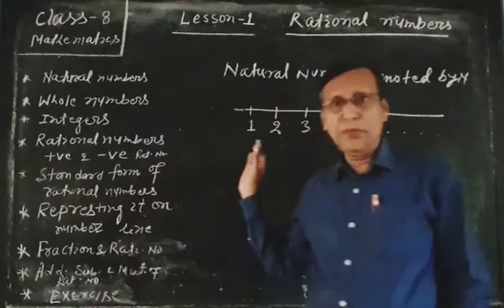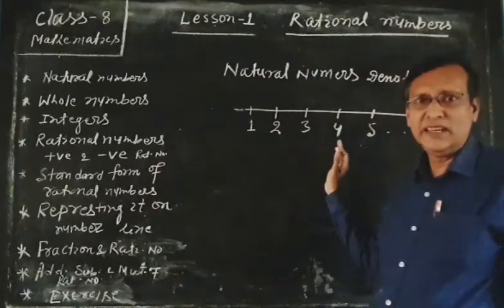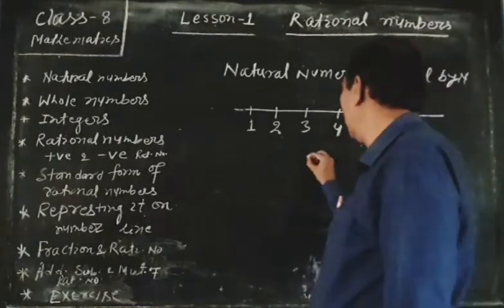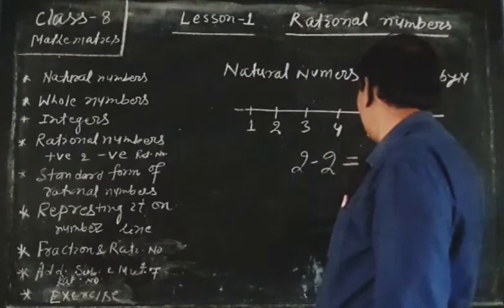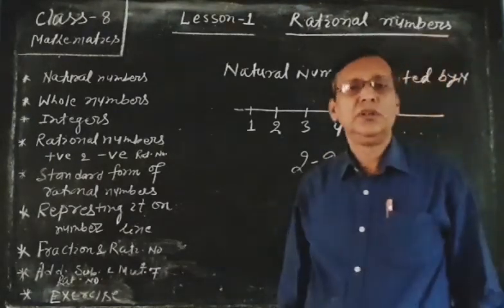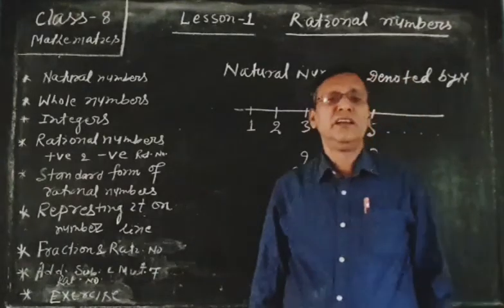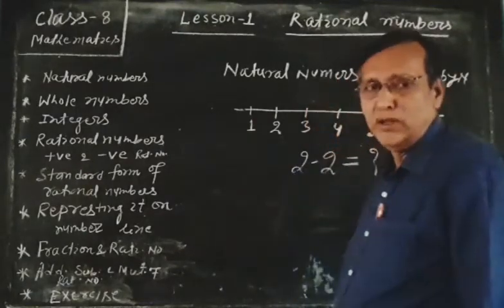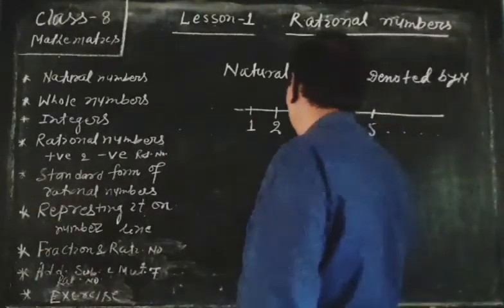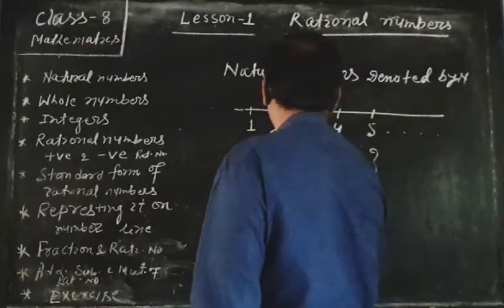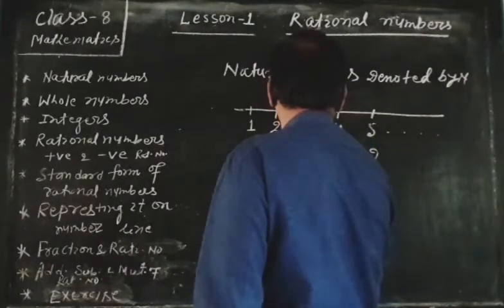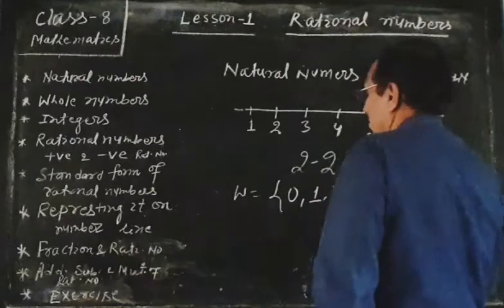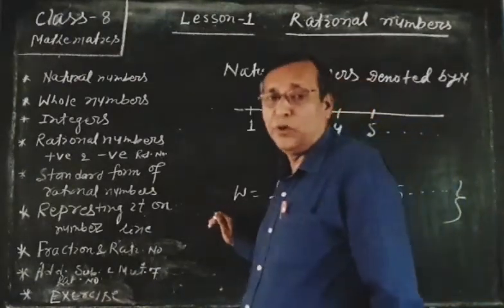But this group of numbers is insufficient as it did not have answers to questions like 2 minus 2. So the group of numbers was extended by adding the number 0. This new group, containing 0, 1, 2, 3, 4, 5, is called the group of whole numbers.